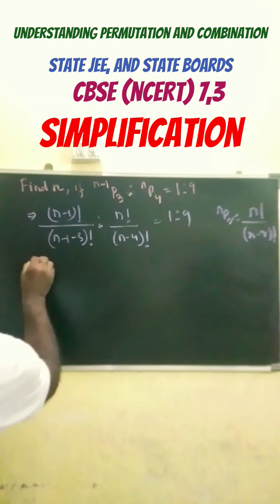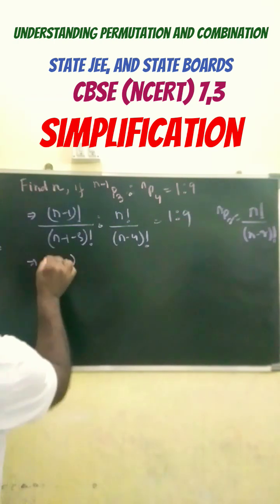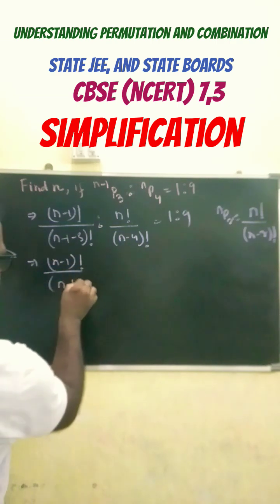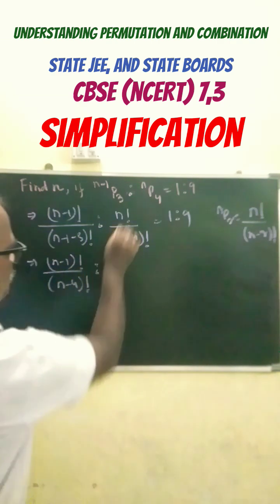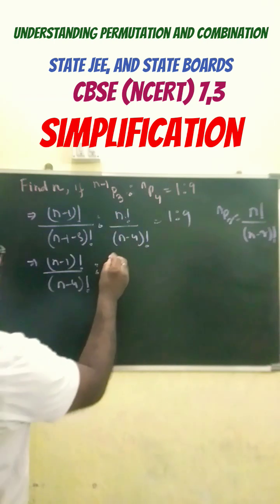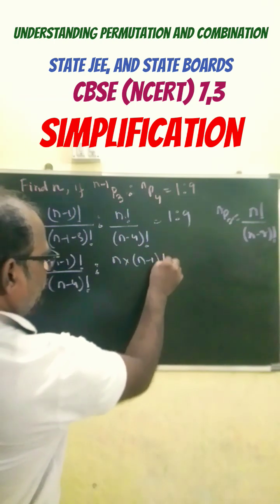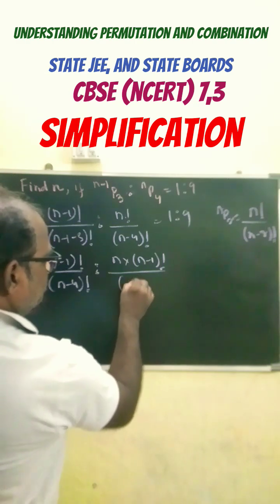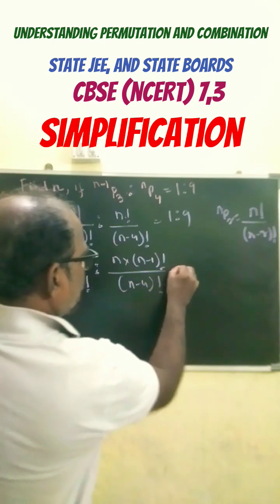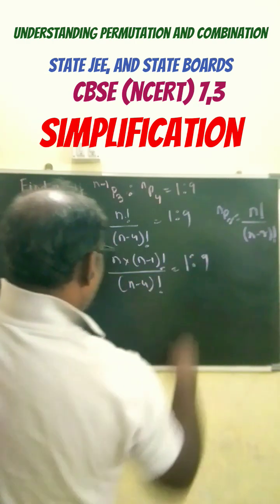Now, looking after here we get here n minus 1 factorial by n minus 4 factorial is to n into n minus 1 factorial we can write down here n minus 4 factorial equals to 1 is to 9.